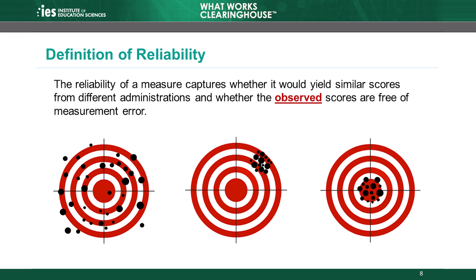For example, imagine that these target images represent the outcome measure of interest. The center of the target represents the concepts that the outcome measure claims to measure. An outcome measure with reliability produces measurements that hit the target consistently in the same general area. The first target represents a measure that is not reliable, because the results are scattered across the whole target. The results in the second target are clustered in a single area, so this measure is reliable. The results do not need to hit the center of the target to be considered reliable.